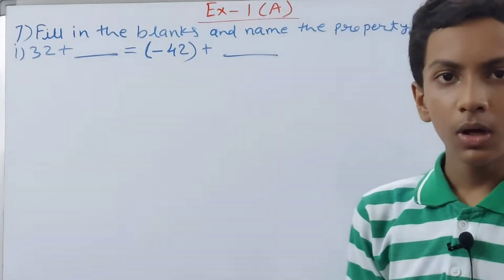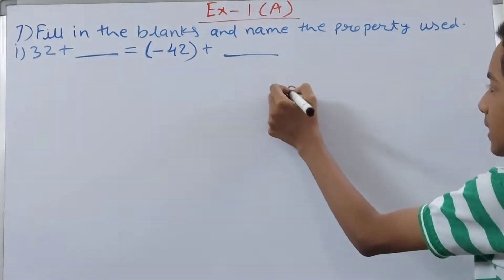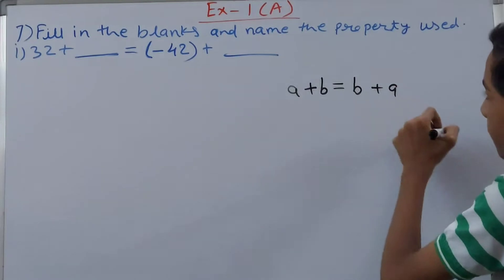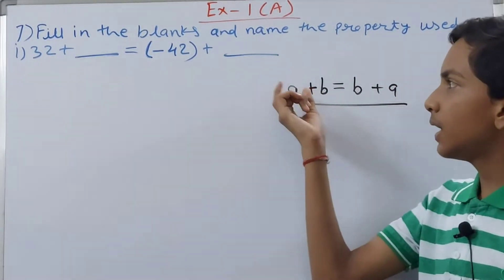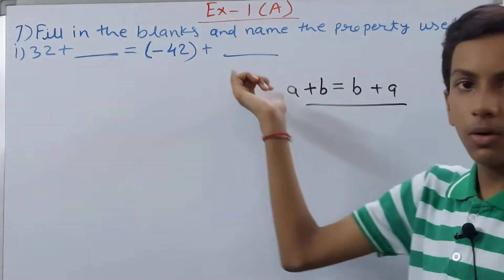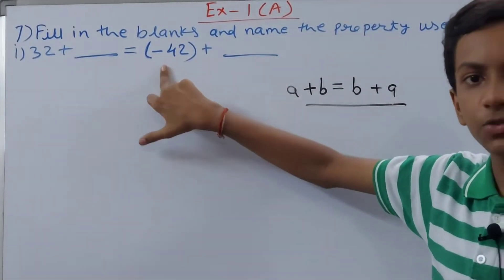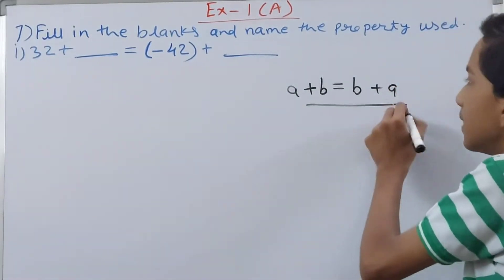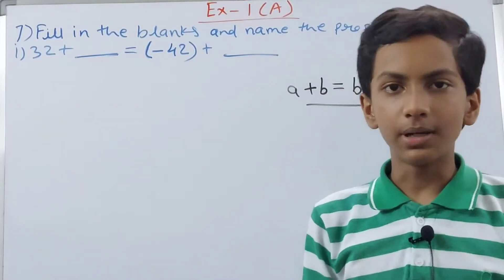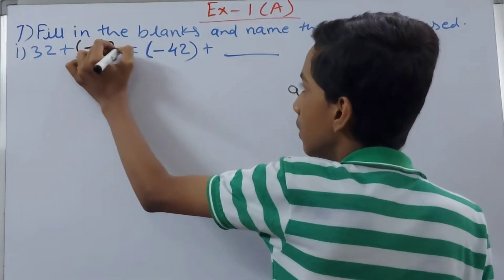Let us first think of the commutative property. It says that a + b can also be written as b + a. So if a is 32 and b is the number we have to find, then we can also write it as b + a. Here b is minus 42 as given, and then plus a, which is 32. So we write: 32 + (−42) = (−42) + 32.